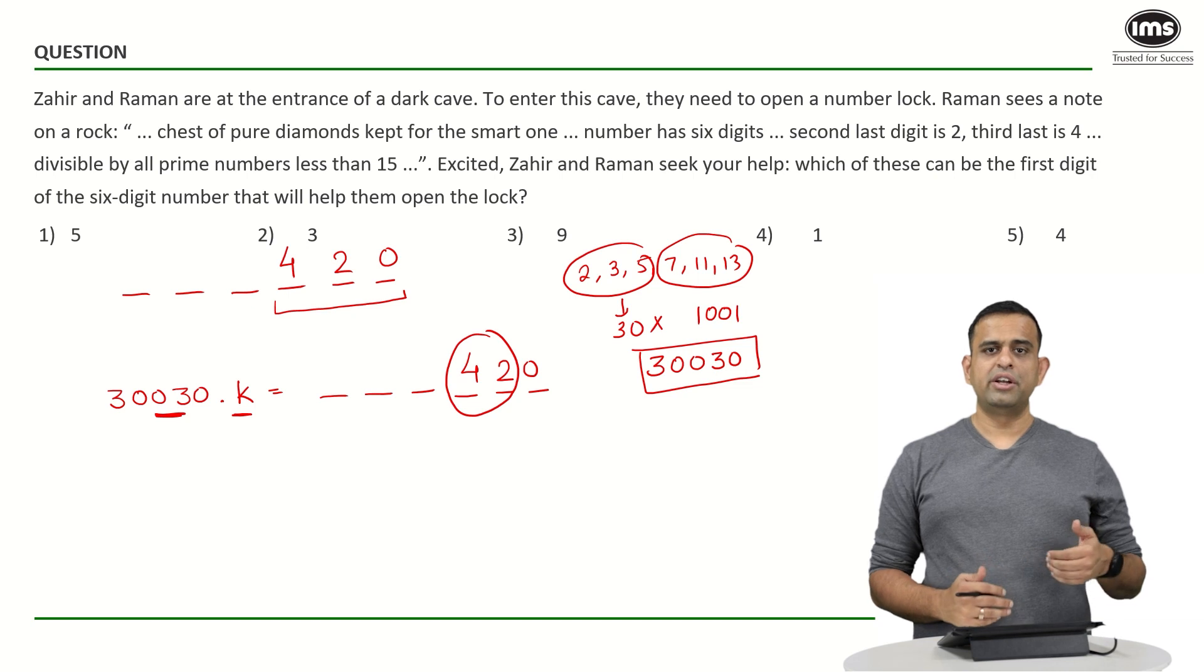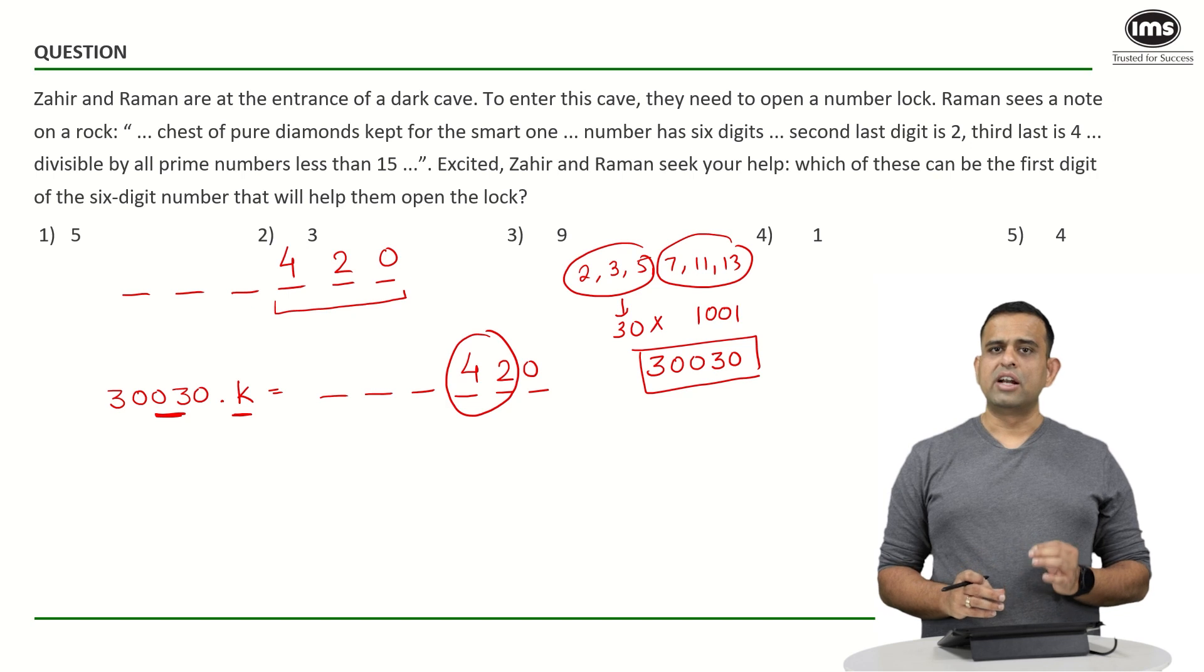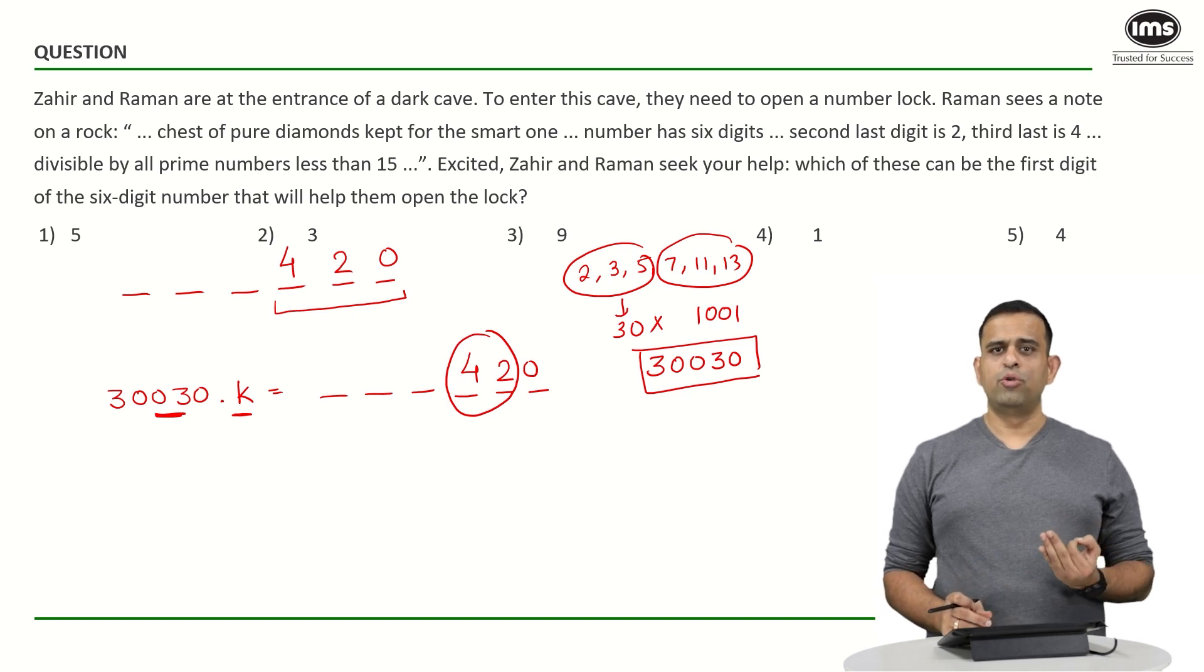So let me ask you in the table of 3, 3 into what will correspond to the number 42 and that simple answer will turn out to be 14.